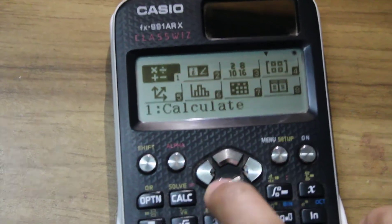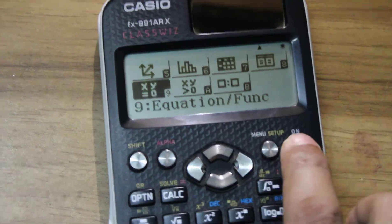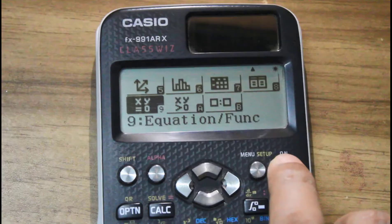Now see, everything is in English. So in this way, you can change the language of Casio Classways calculator from Arabic to English.